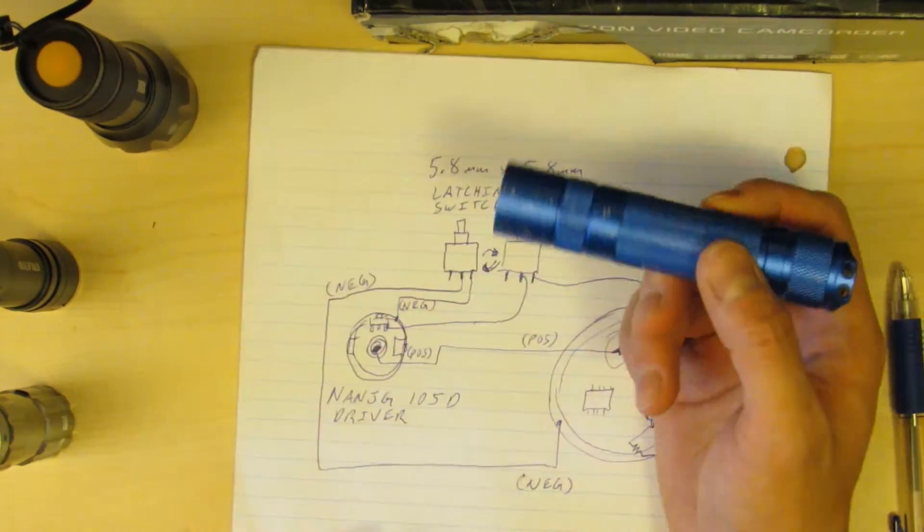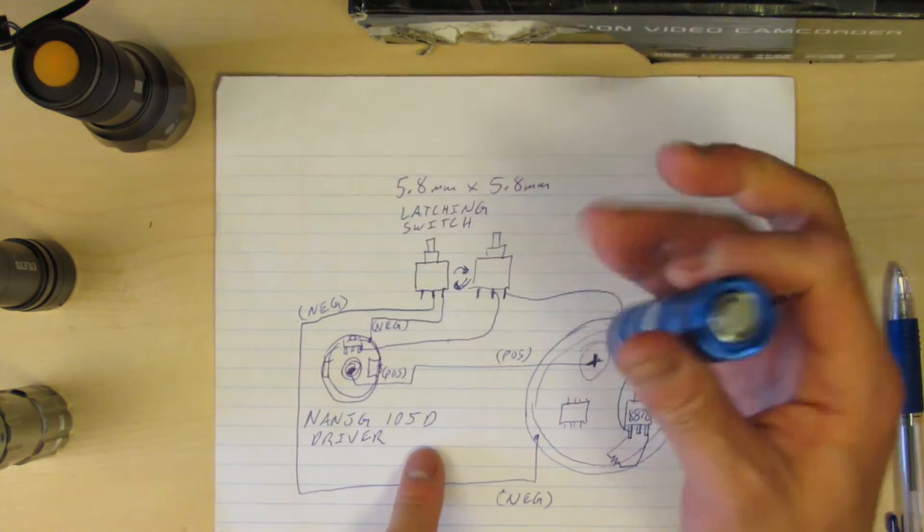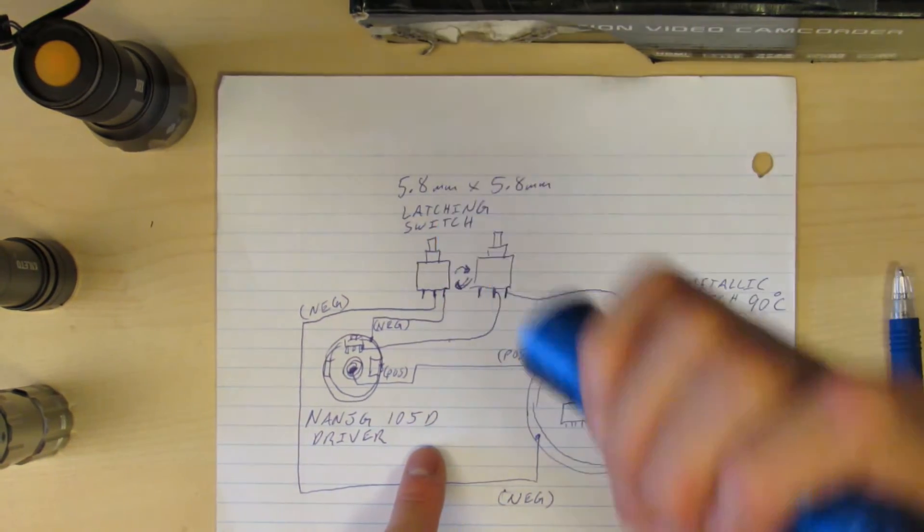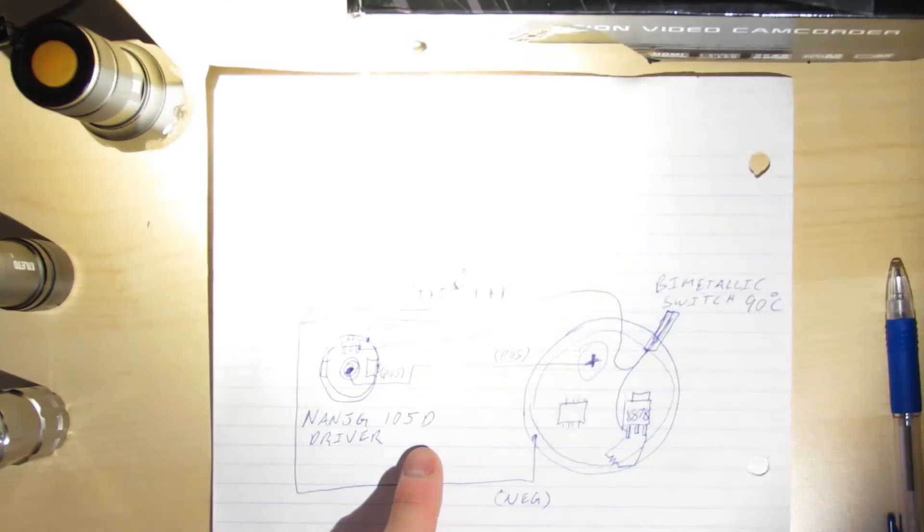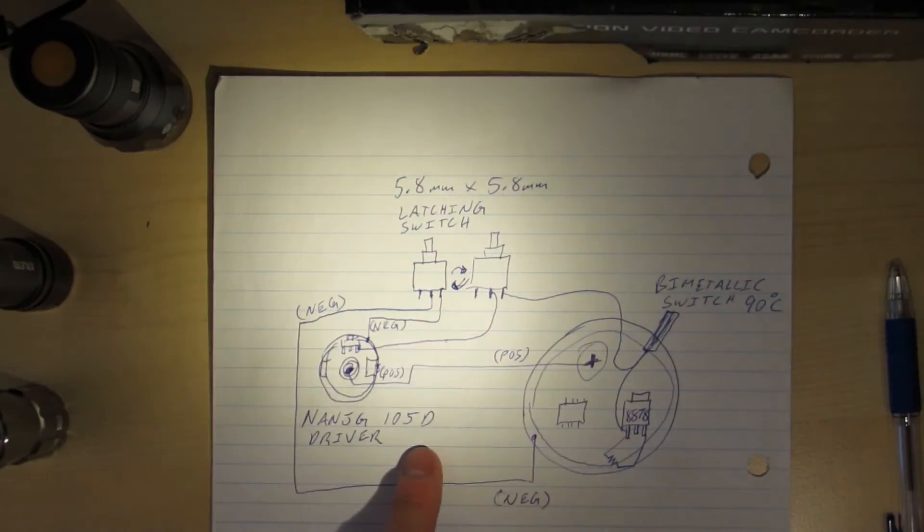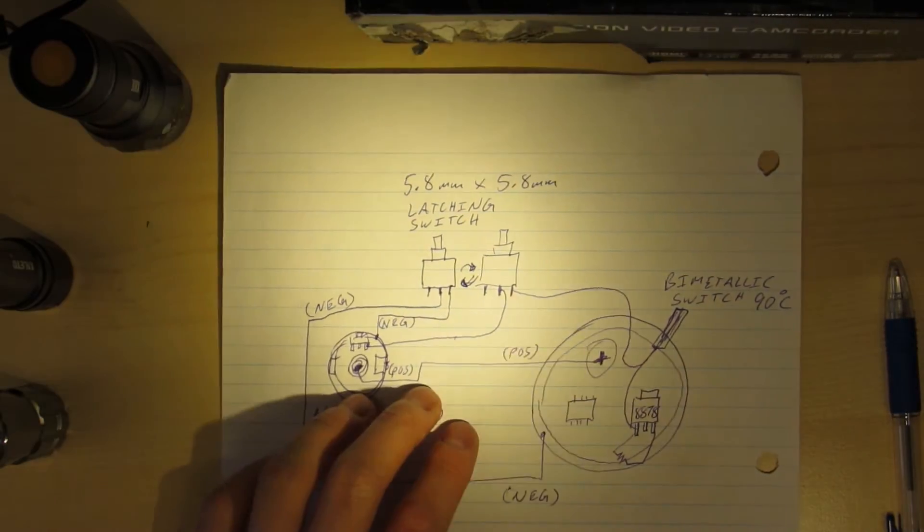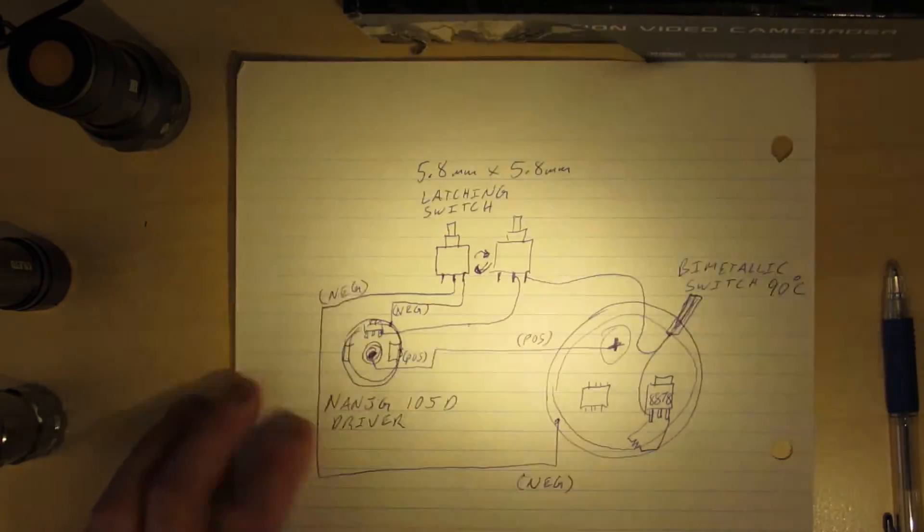The Convoy S2 Plus has the same 105D driver in there and that's what makes it so great, because it has high pulse width modulation, high dimming. It can go to 5% like this and it doesn't really flicker too much. It's still not a super high frequency but it'll do.